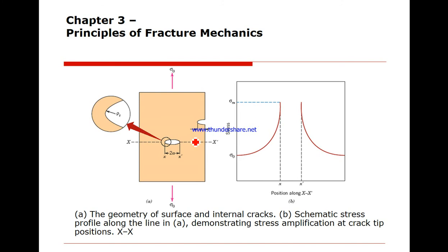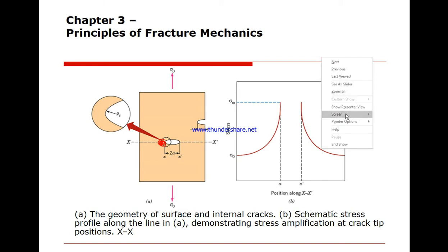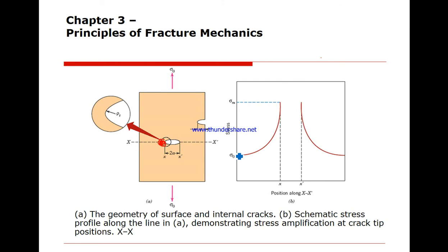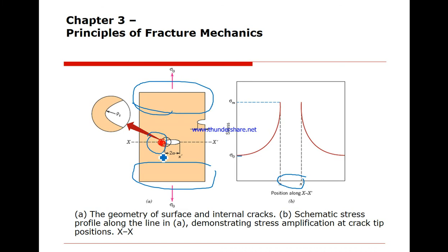When we have a crack and we apply a stress, by Saint-Venant's principle the stress is nominally uniform across the area — the same force or stress throughout the system. However, due to the presence of the crack, the stress is magnified around the crack tip. For example, you apply sigma zero of 20 MPa, but around the crack the stress is augmented — it could become 50 MPa in that region.